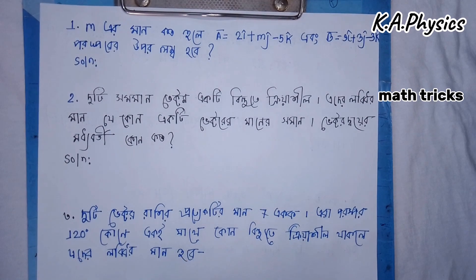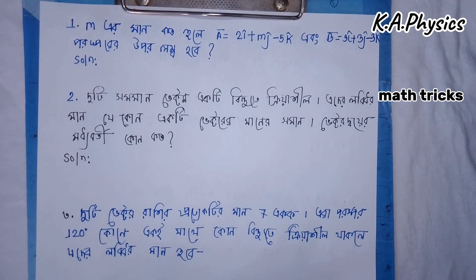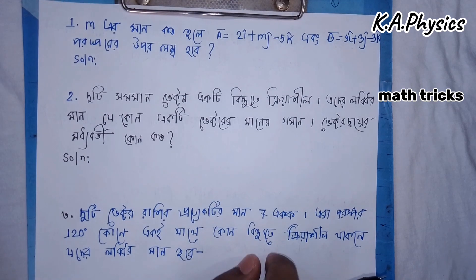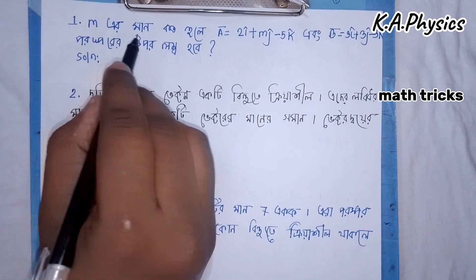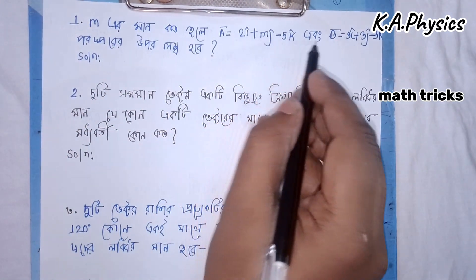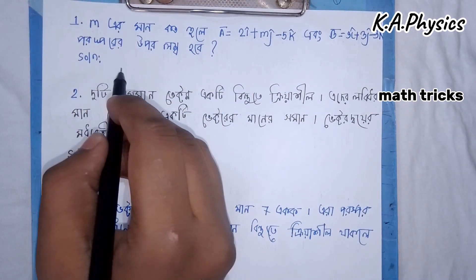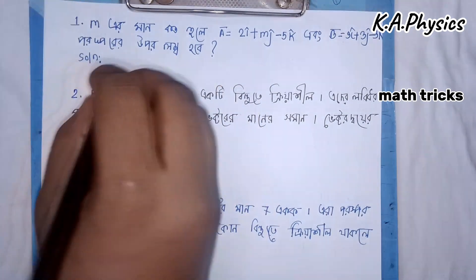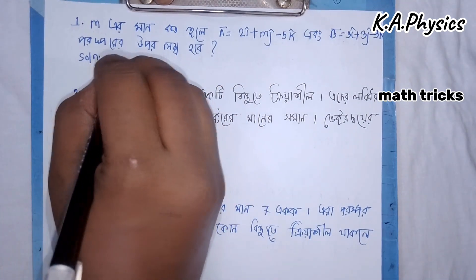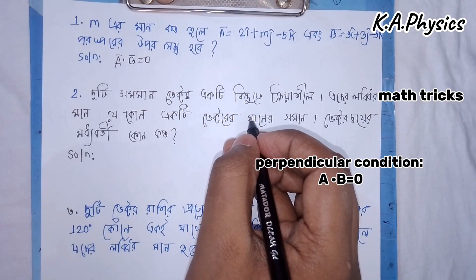This is a shortcut. The question is: how is a vector 2i plus mj minus 5k, or 3i plus 3j minus 3k? A vector dot v is equal to 0.